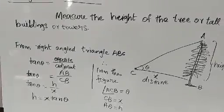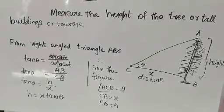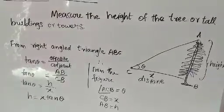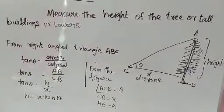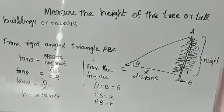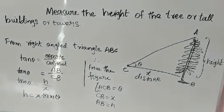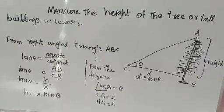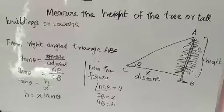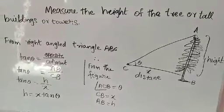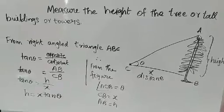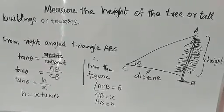From the right-angled triangle ABC, tan theta equals opposite side by adjacent side. Opposite side AB, base is adjacent side CB. AB equals H, CB equals X. So tan theta equals H by X. Therefore, H equals X tan theta.